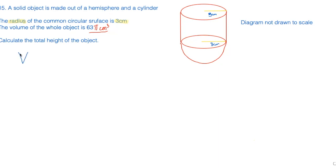So the volume of the whole object, the whole thing there, is equals to 63π and the unit is centimeters cubed. Calculate the total height of the object. So this is the total height of the object.